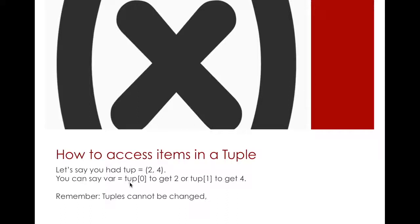Because as we talked in the list, the first item is always at index zero. If you want the second item of the tuple, you can just say tup of one. That's all you need to know.